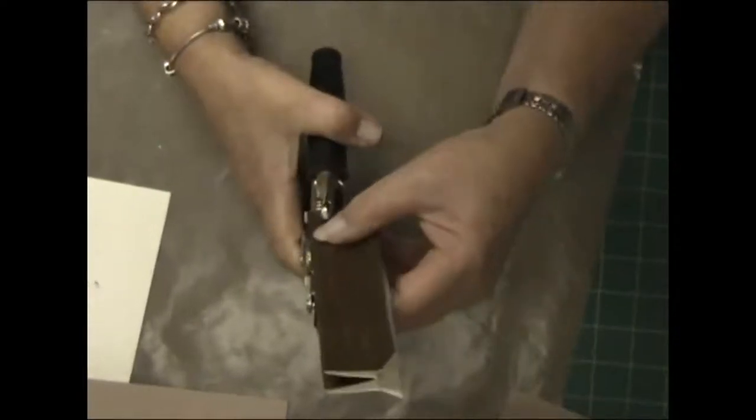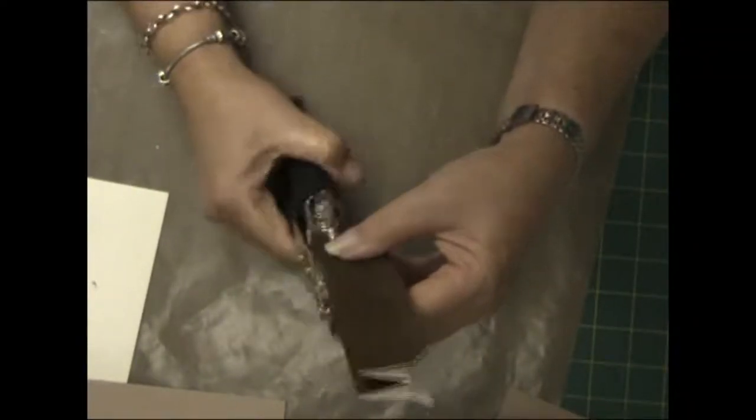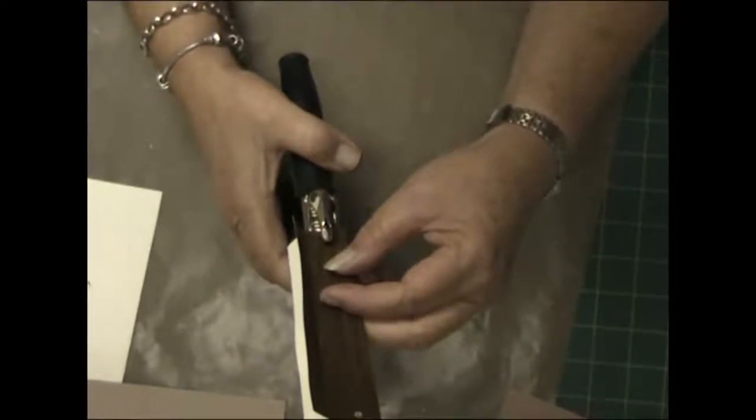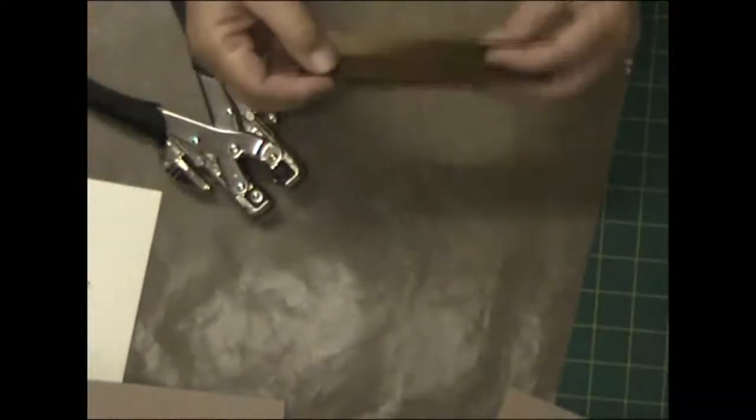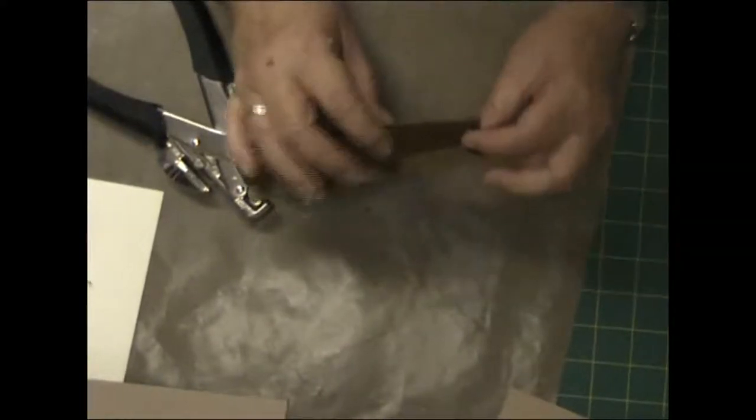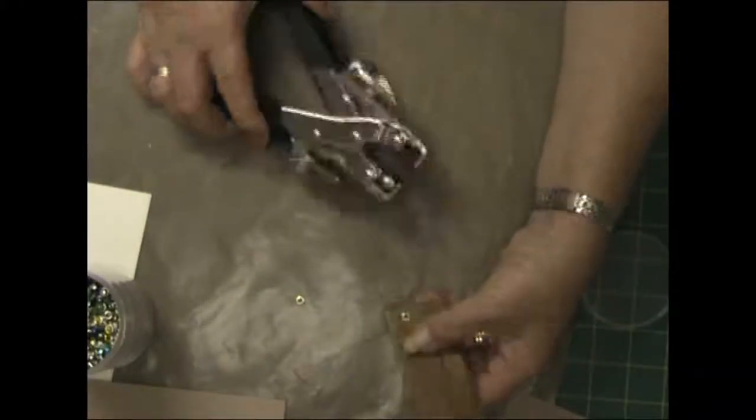So there's one little section there, and now to join it all together you just punch a hole in each end and insert an eyelet, or you could insert a brad, and then you just slot something in the middle. So I'm using gold eyelets there.